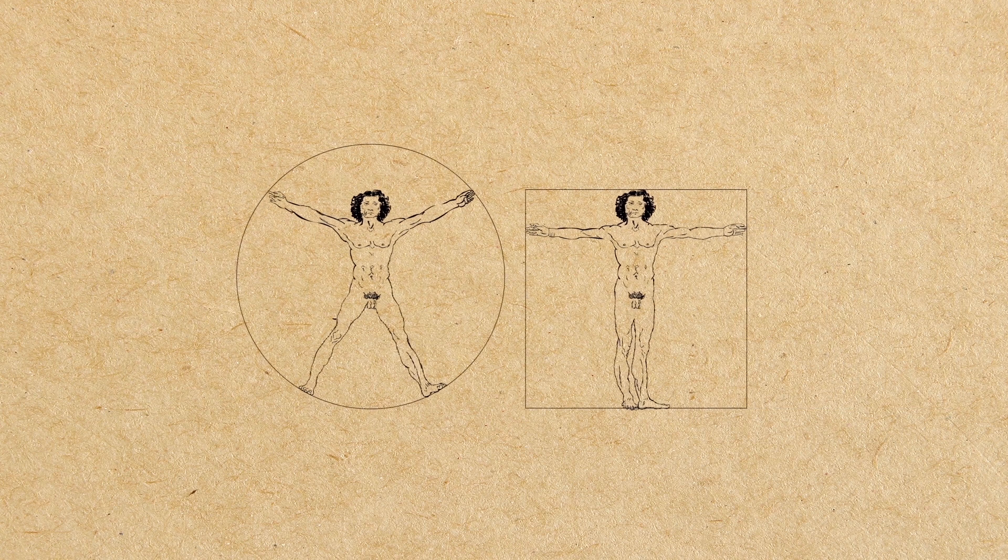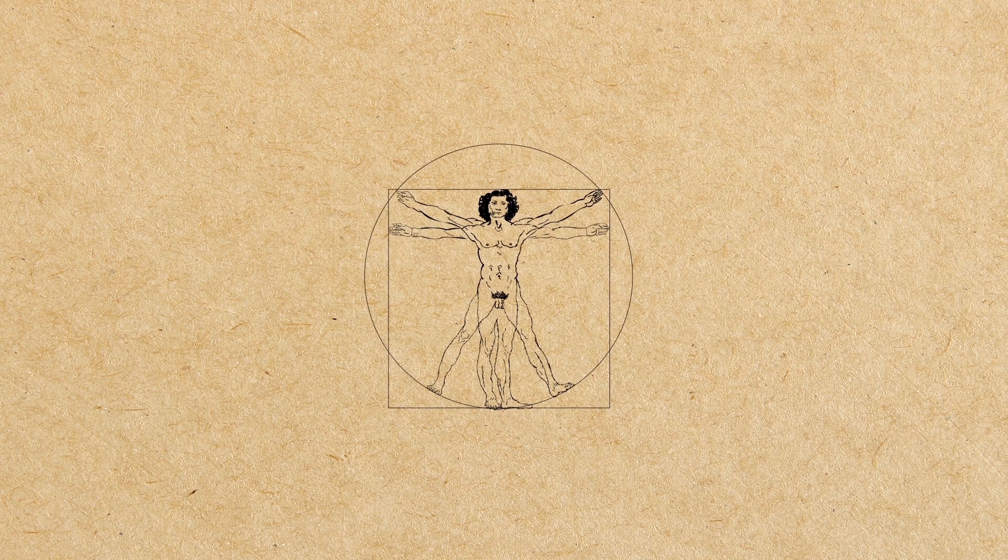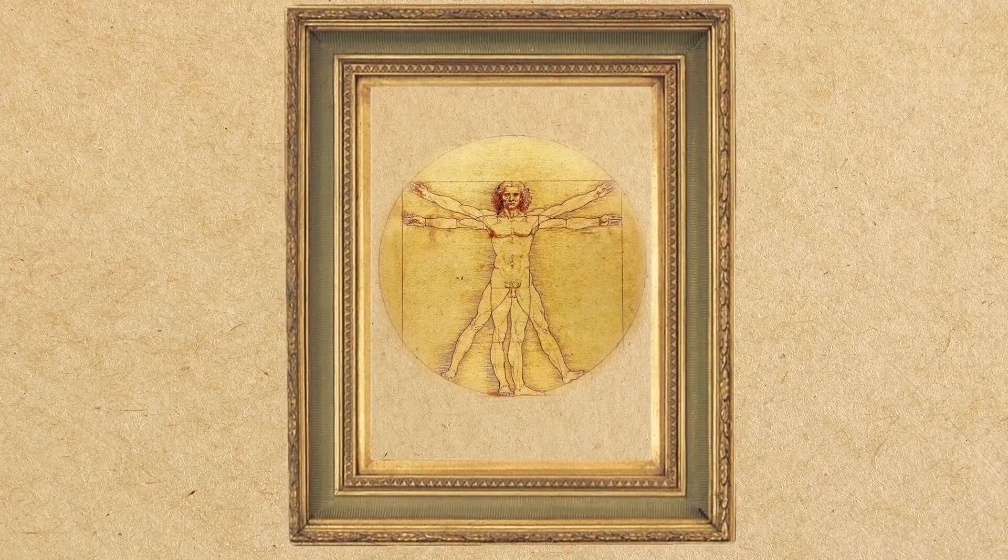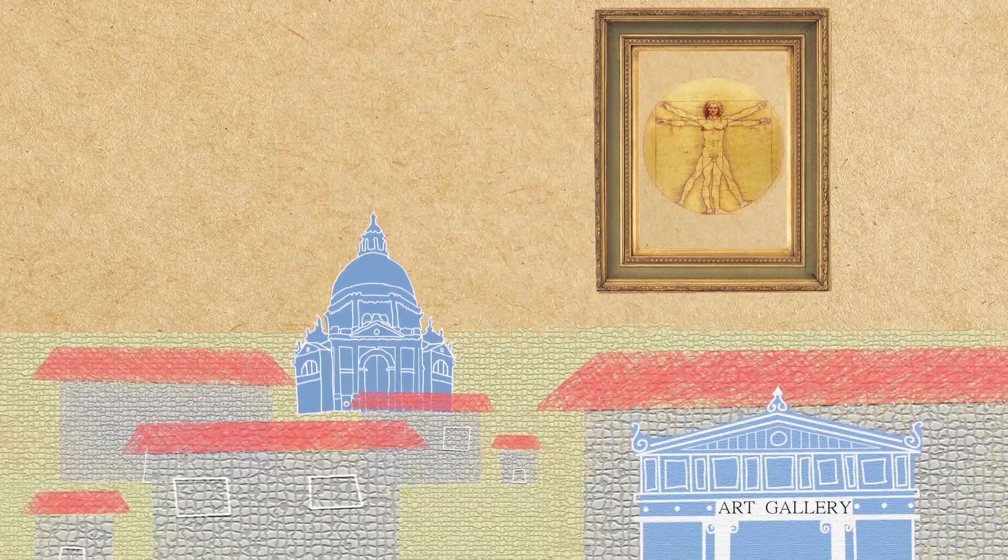The drawings are often called the Canon of Proportions. The drawing is in pen and ink and kept at an art gallery in Venice.